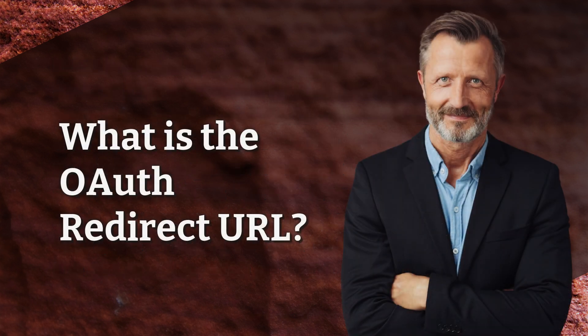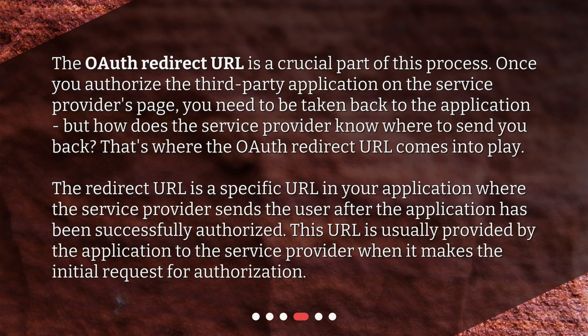What is the OAuth redirect URL? The OAuth redirect URL is a crucial part of this process. Once you authorize the third-party application on the service provider's page, you need to be taken back to the application. But how does the service provider know where to send you back? That's where the OAuth redirect URL comes into play. The redirect URL is a specific URL in your application where the service provider sends the user after the application has been successfully authorized. This URL is usually provided by the application to the service provider when it makes the initial request for authorization.